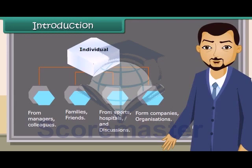Types of data. Primary data. Secondary data. Data which are not originally collected but obtained from published or unpublished sources are called secondary data.